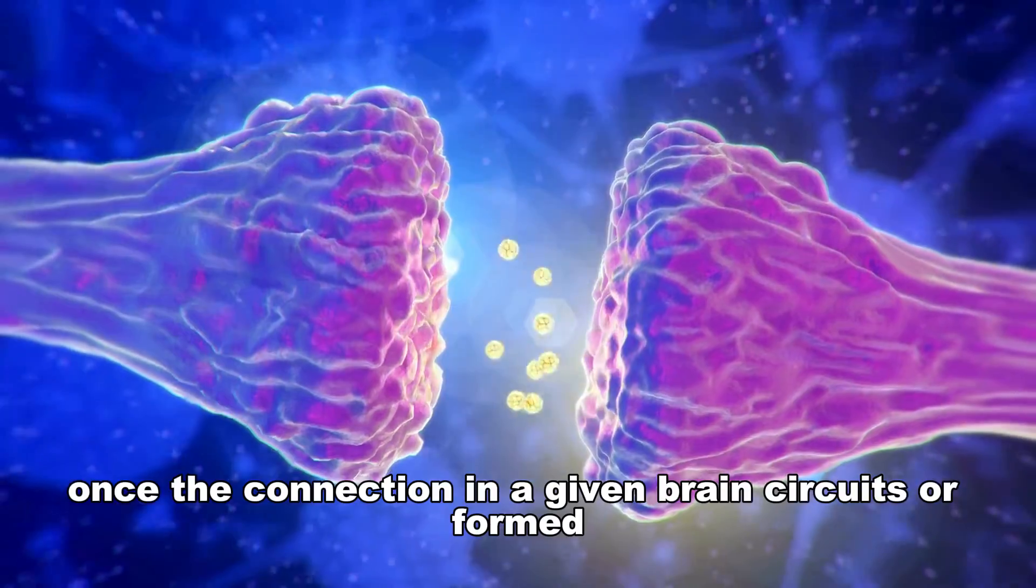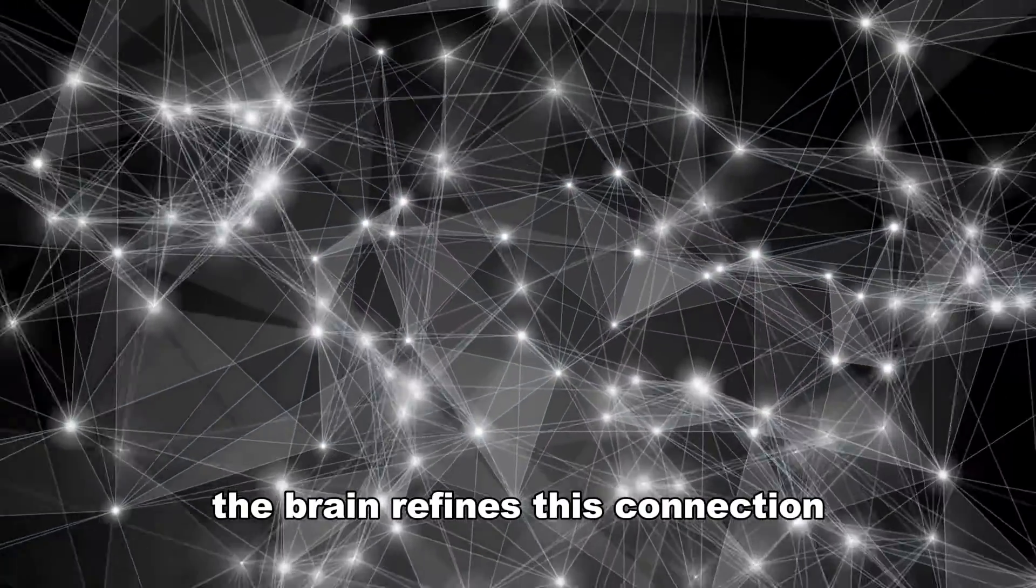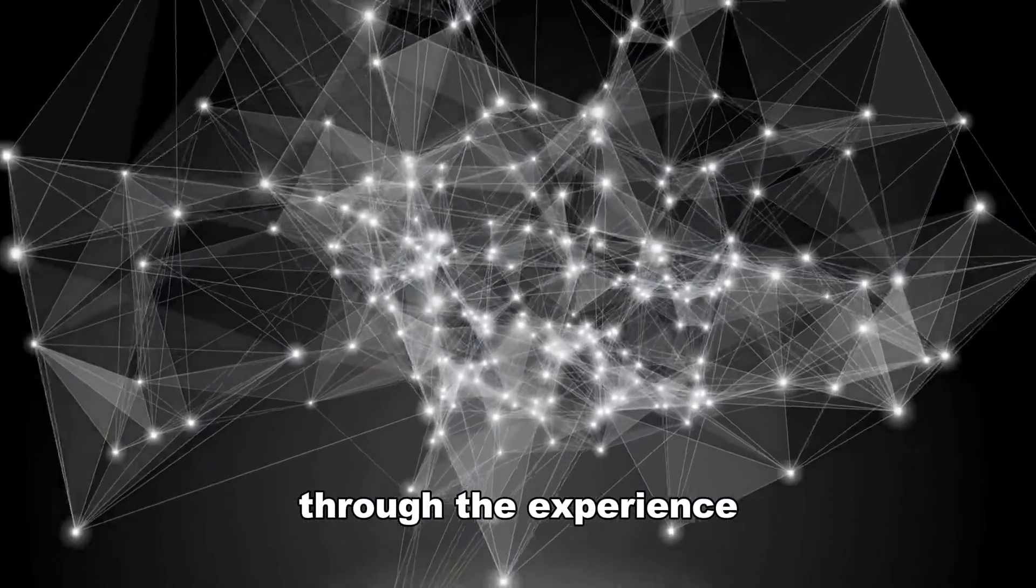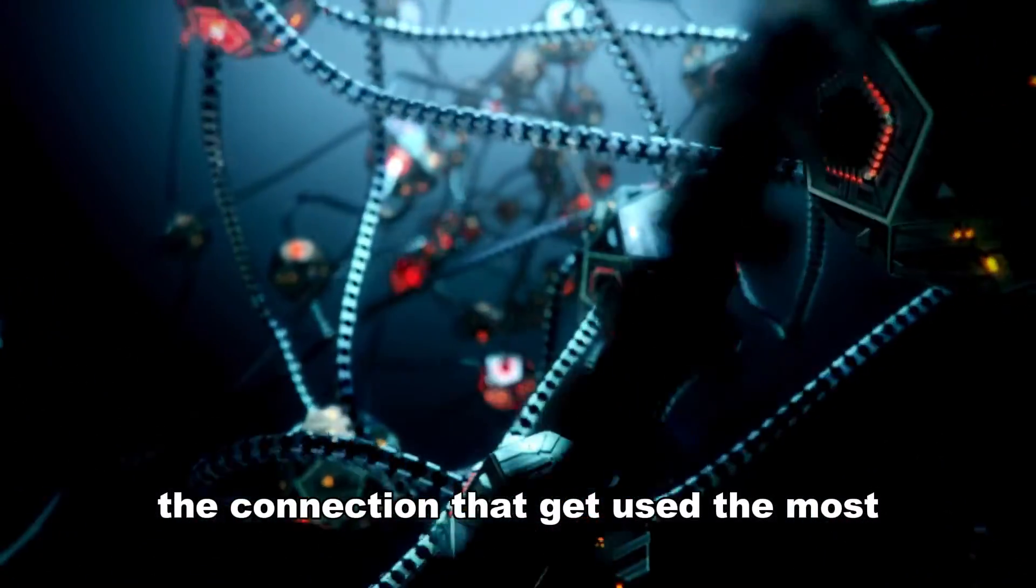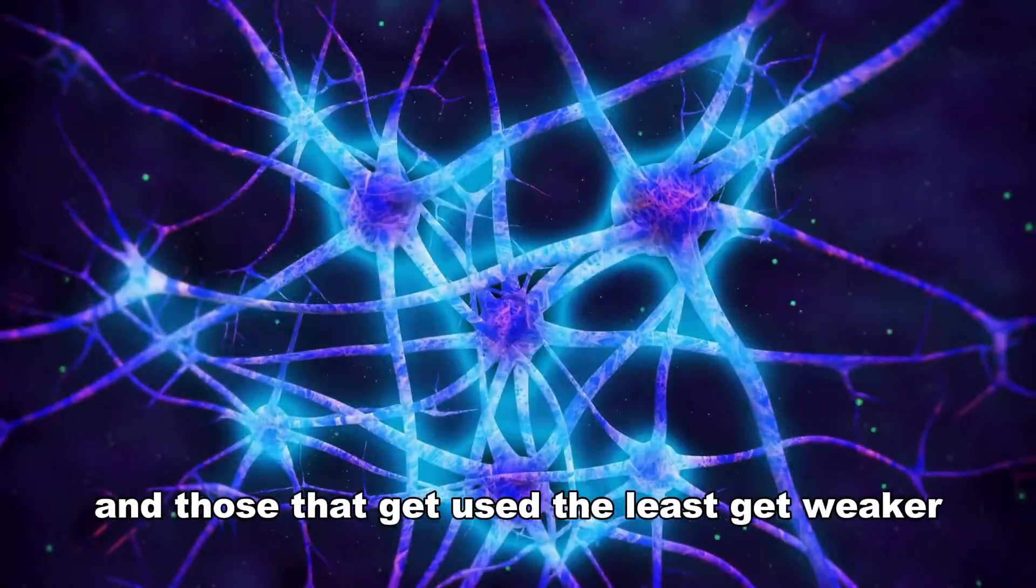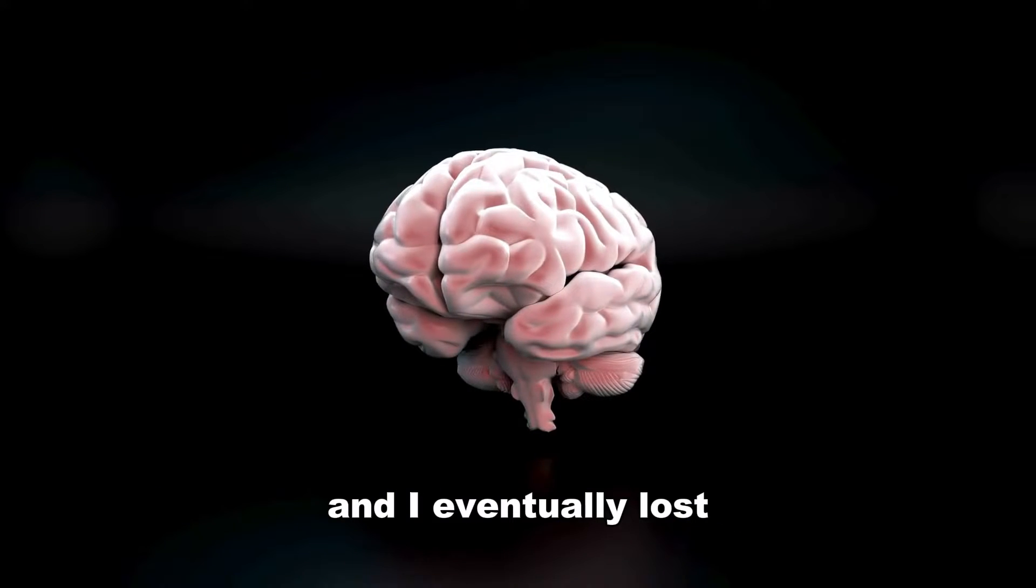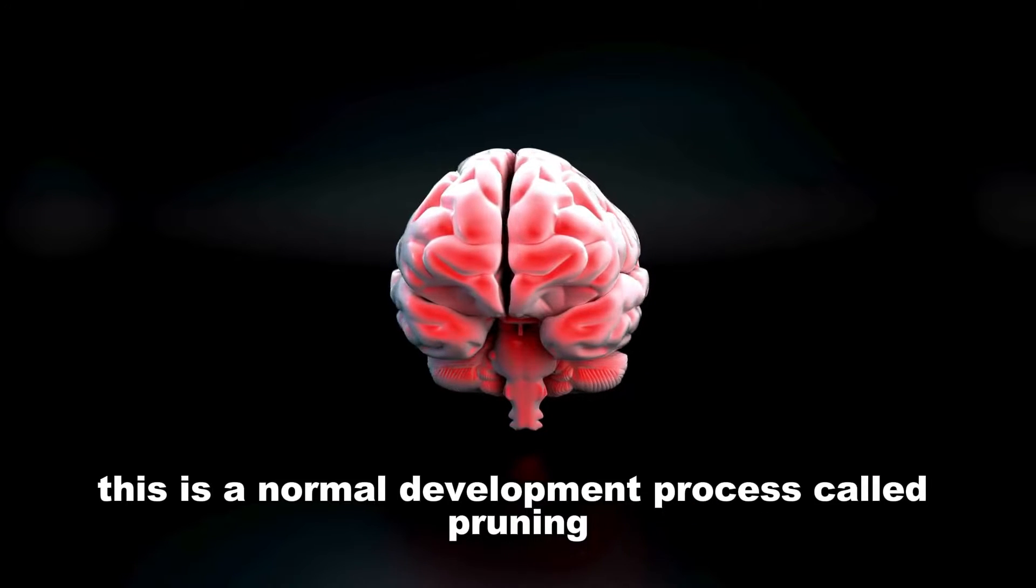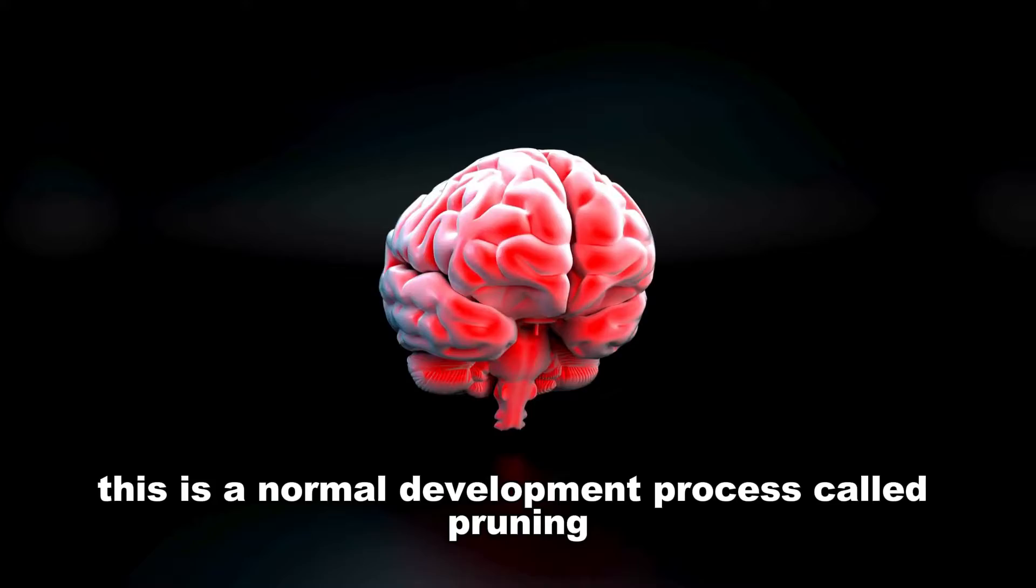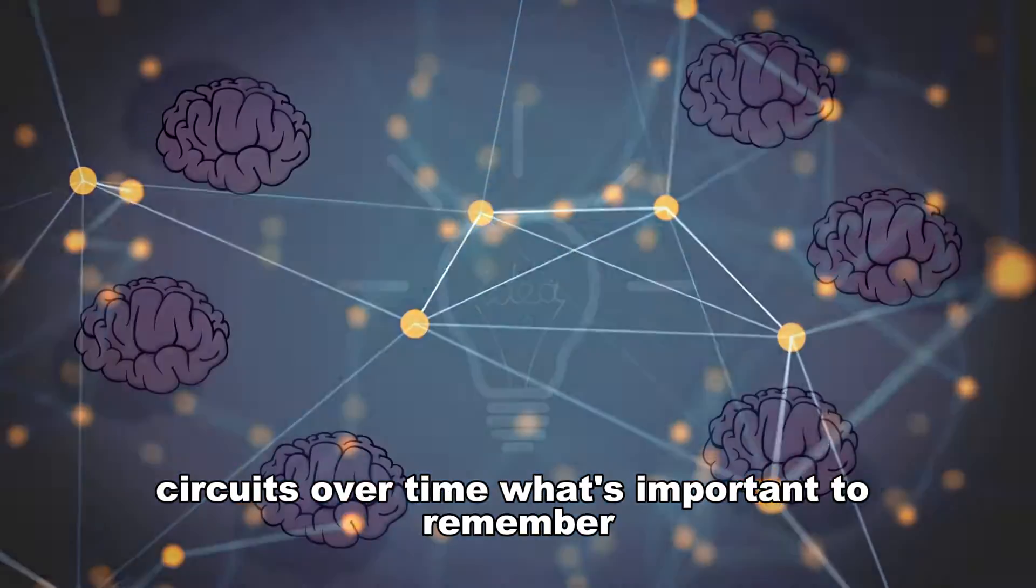Once the connections in a given brain circuit are formed, the brain refines these connections through experience. The connections that get used the most become very strong and resistant to change, and those that get used the least get weaker and are eventually lost. This is a normal development process called pruning and it allows the brain to create more efficient circuits over time.